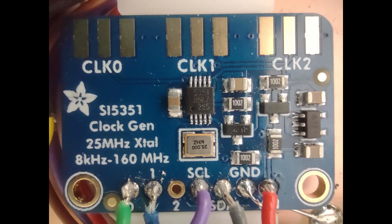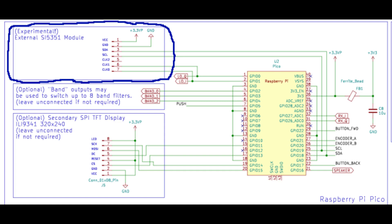One of the cool features of the Pi Pico RX is that it uses the PIO function of the Pi Pico to generate the local oscillator. It means we can build a receiver using minimal hardware. But there's nothing stopping us using an external oscillator with the Pi Pico RX. I thought it would be fun to add support for the SI5351 just to see how it works. Keep in mind that this is an experimental optional feature — you don't really need the external oscillator to get the Pi Pico RX up and running. For most people, it's much simpler to just use the internal oscillator.